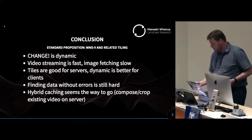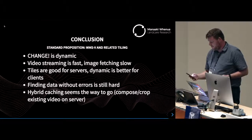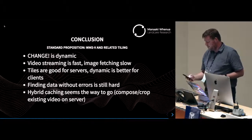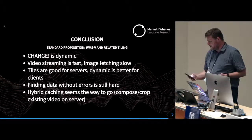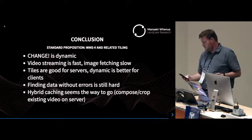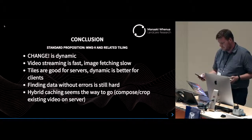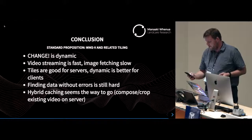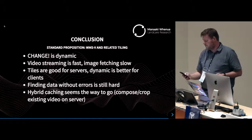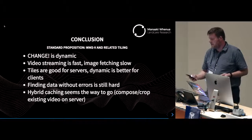Coming to the conclusions: video streaming is fast and image fetching is slow. Tiles are good for servers and dynamic is better for clients. Finding data without errors is still hard. Hybrid caching seems the way to go. Composing and cropping existing videos on the server works well. What was the problem statement from the beginning? Change — it's what we want to see. Change is what WMSV can show. So consider WMSV as something on your radar. Thank you, and I'll open for questions.